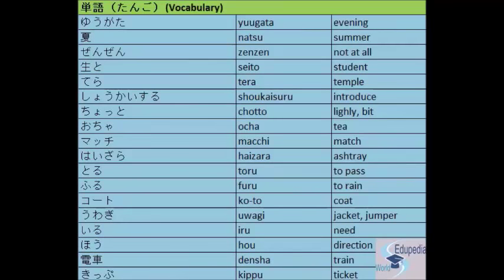'Chotto' — lightly, a bit. 'Ocha' — tea. 'Cha' is tea and 'o' is the honorific particle. 'Macchi' — match. 'Macchi' is a foreign word and hence it is written in katakana. 'Haizara' — ashtray. 'Hai' is ash and 'sara' is tray, so when you combine 'hai' and 'sara' it becomes 'haizara', which is ashtray.